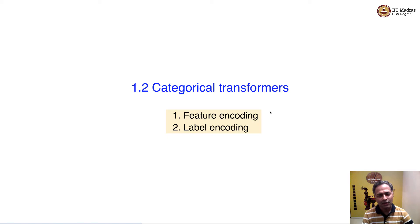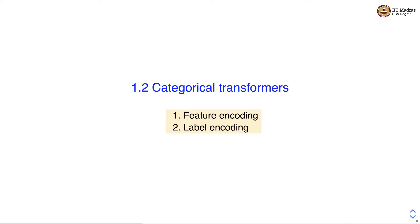Namaste. Welcome to the next video of the machine learning practice course. In this video we'll discuss categorical transformers. We'll use categorical transformers for categorical feature encoding and also for label encoding.